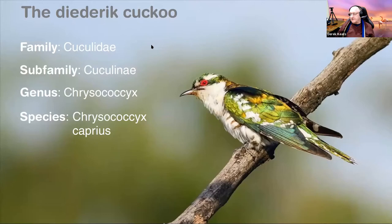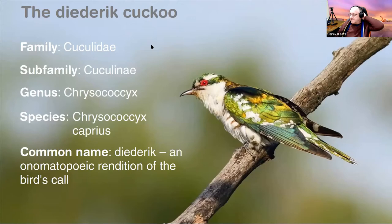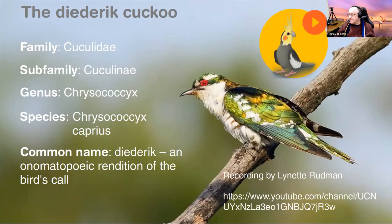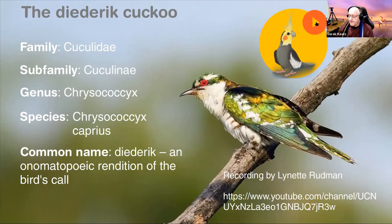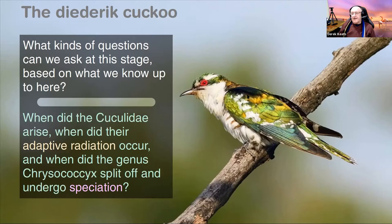The species name of the Dideric Cuckoo is Chrysococcyx caprius — 'caprius' also referring to that coppery bronzy color. The common name 'Dideric' is an onomatopoeic rendition of the bird's call — the 'Dideric, Dideric' — that you'll hear in a second. That call is synonymous with spring in southern Africa. By October, these birds have arrived and are calling all over the place.